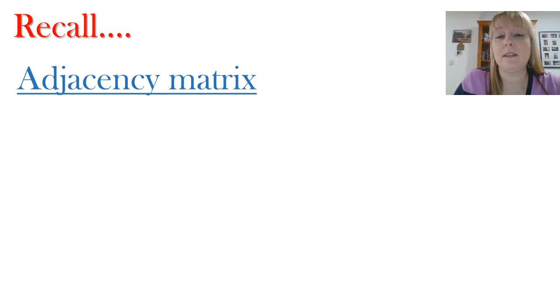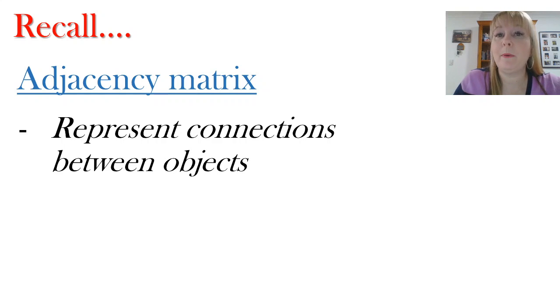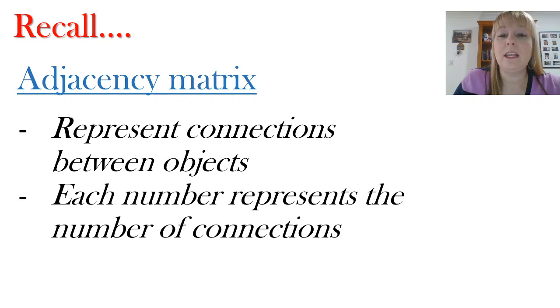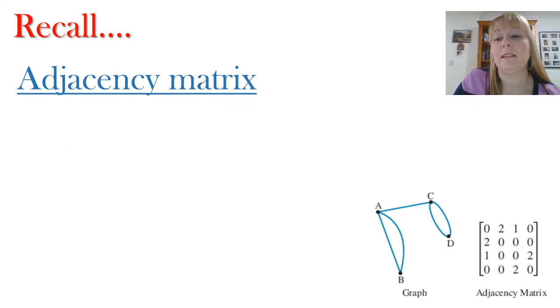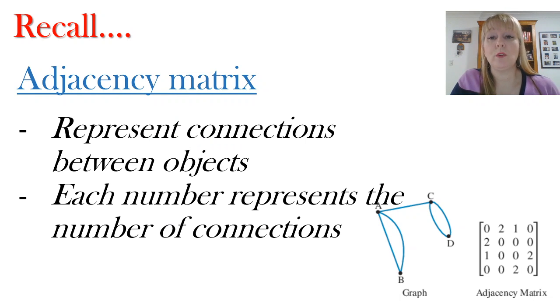Now we also looked in grade 11 at adjacency matrices. They are a special kind of matrix that represent connections between objects. And each number in the matrix represents the number of connections. So in this particular graph that's shown on the left, these could be towns and roads that connect the towns. You notice that between town A and town B, there are two roads that run in parallel to one another. And so this would be represented in the matrix as the number two. Obviously, between a town A and itself, well, you can't go anywhere. So that would be represented by zero. And between town A and C, for example, there's only one connection. So we represent an adjacency matrix by showing the number of connections between two different objects.